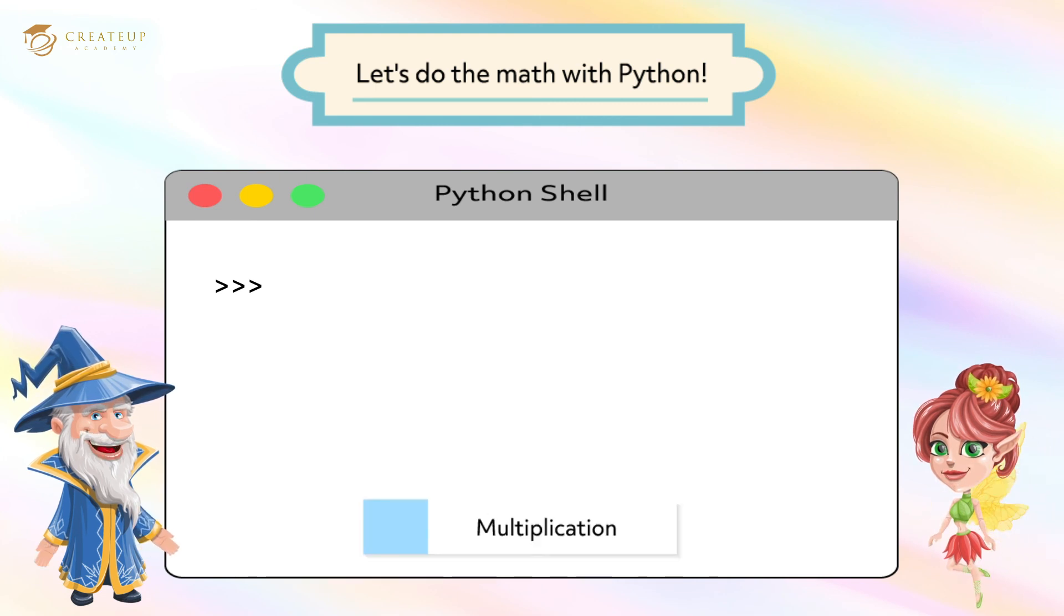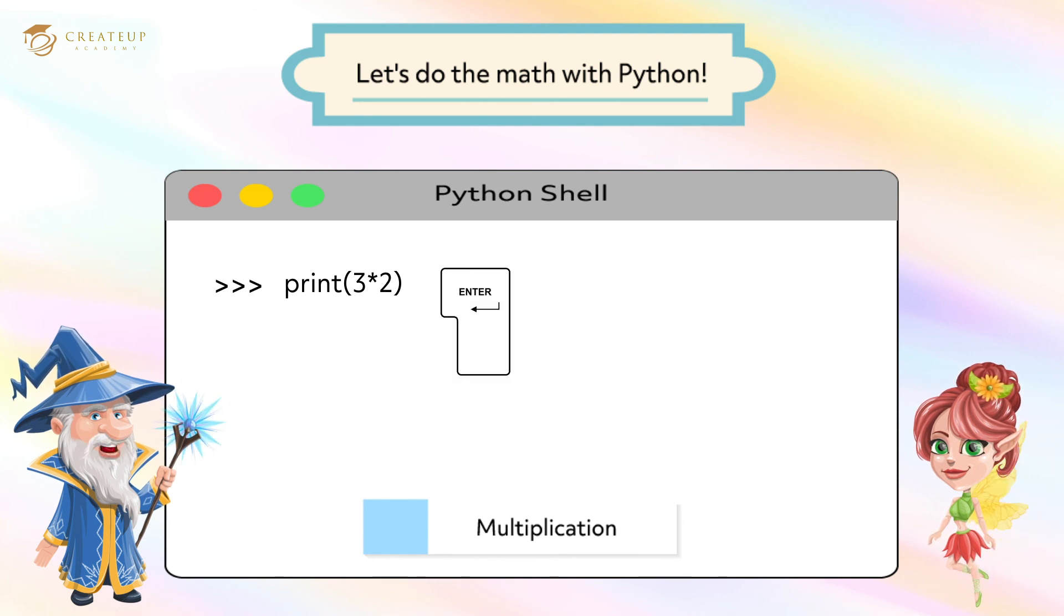Next, let's try multiplication. Let's calculate 3 times 2. Type print after the prompt and type 3 asterisk 2 in parentheses. The asterisk is the operator for multiplication. The next time you press the Enter key, the result of the calculation, 6, is displayed.